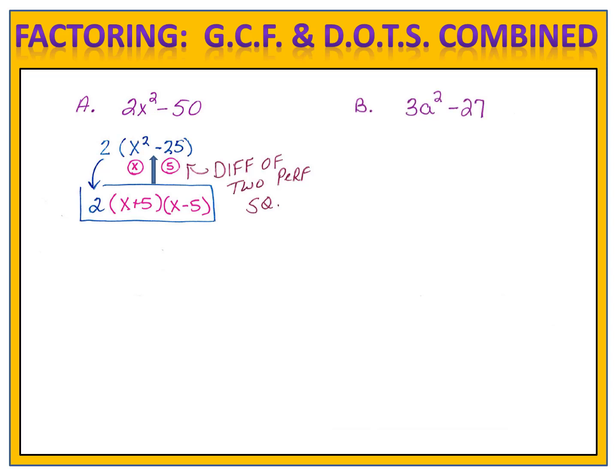Here's a second example. Suppose we want to factor 3a squared minus 27. Where do we begin? By looking for the common factor, of course. The greatest common factor here is 3. And when we divide both terms by 3, we're left with a squared minus 9 in the parenthesis.